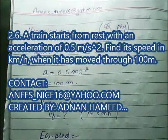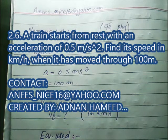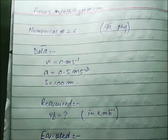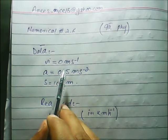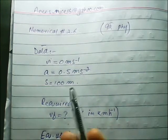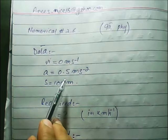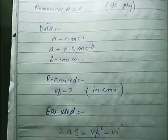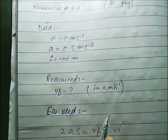Numerical 2.6: A train starts from rest with an acceleration of 0.5 meter per second squared. Find its speed in kilometer per hour when it has moved through 100 meter. Given: initial velocity is 0 (starts from rest), acceleration is 0.5 meter per second squared, distance is 100 meter. Required: final velocity in kilometer per hour.